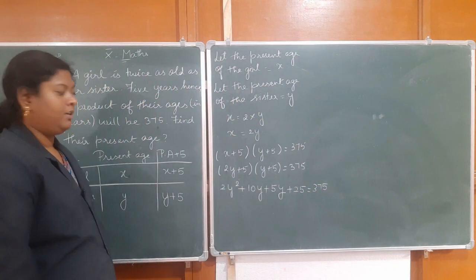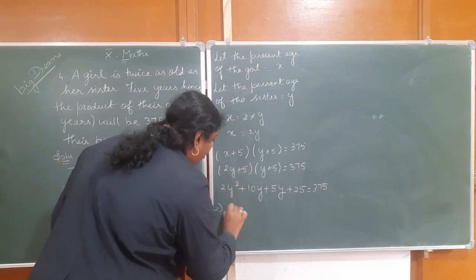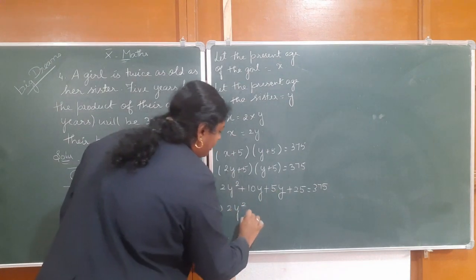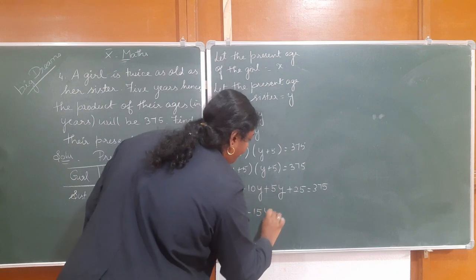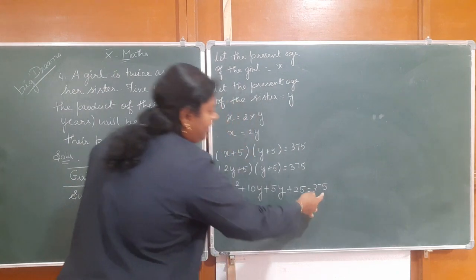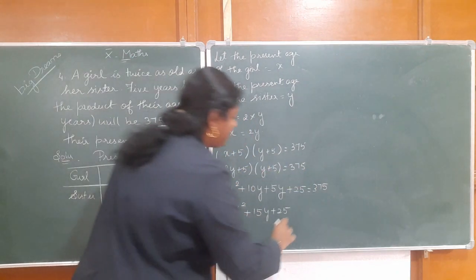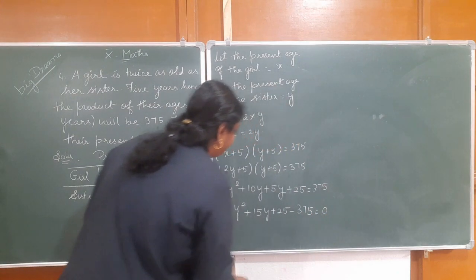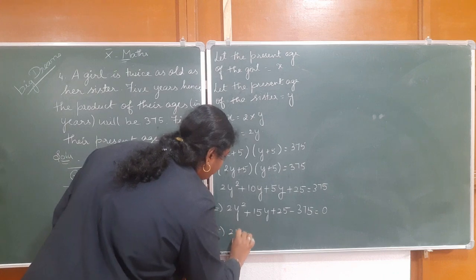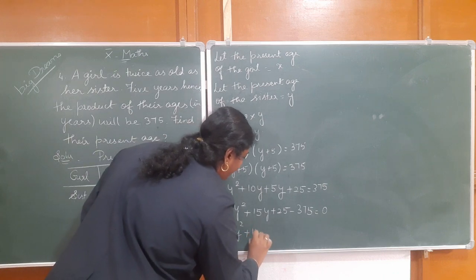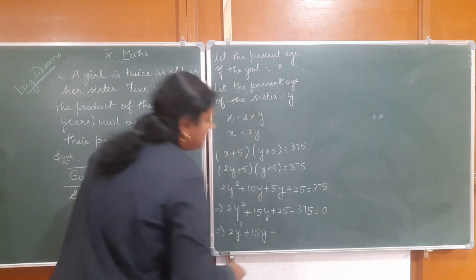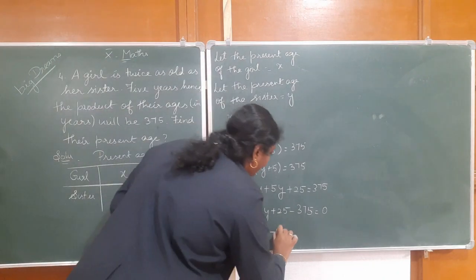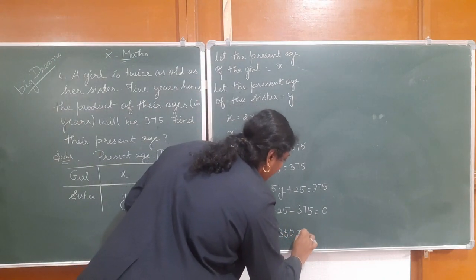So combining like terms: 2y squared plus 15y plus 25 minus 375 is equal to 0. Therefore, 2y squared plus 15y minus 350 is equal to 0.